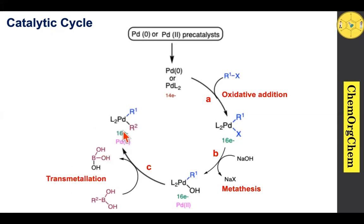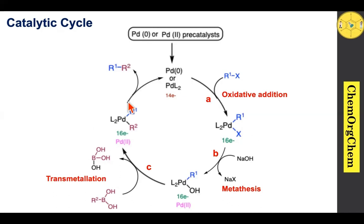The organoboronic acid interacts with the palladium species to produce boric acid as a byproduct. This palladium intermediate is a 16-electron species — this step is called the transmetalation step. The R2 group is exchanged into the palladium species. After formation of this species, reductive elimination occurs to produce the carbon-carbon coupling product. This step is called reductive elimination.